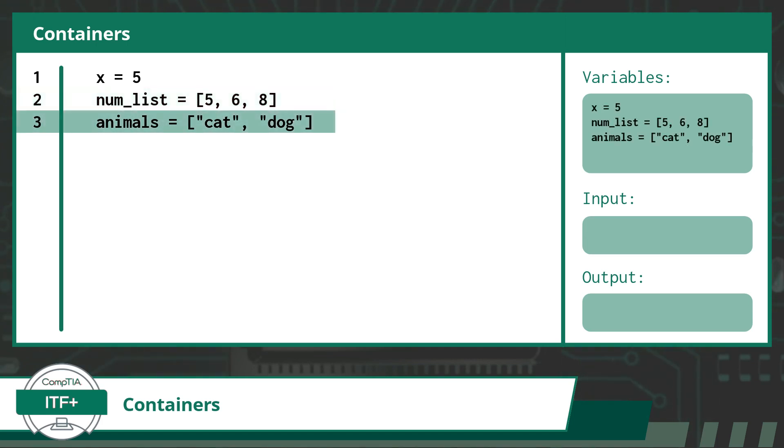And for one more example, we have a container that is given the identifier animals. This container is assigned multiple string values, specifically cat and dog.